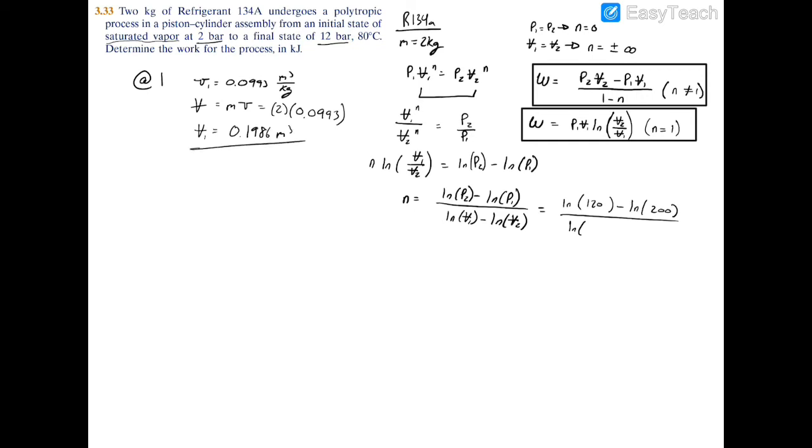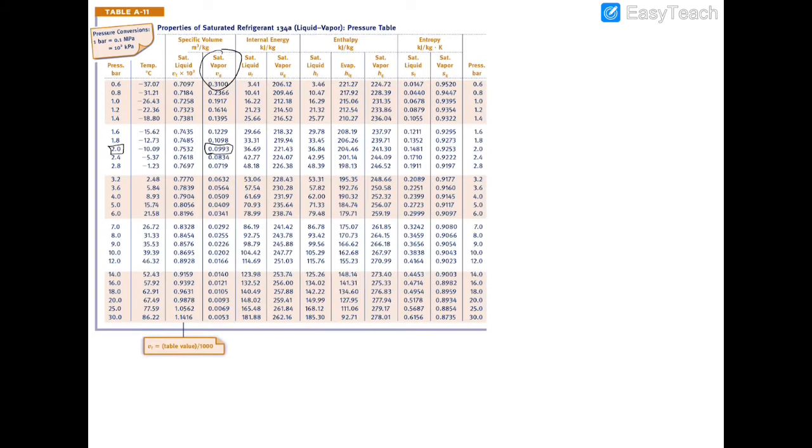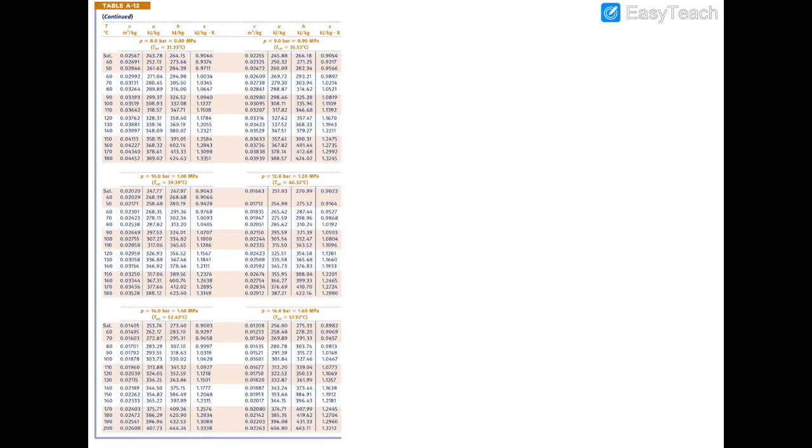So we plug that in: 0.1986 minus the natural log of V2. At V2 we have 80 degrees Celsius and 12 bar. At 12 bar we have a saturation temperature of 46 Celsius, so we're way above that at 80. Let's turn to the superheated table.